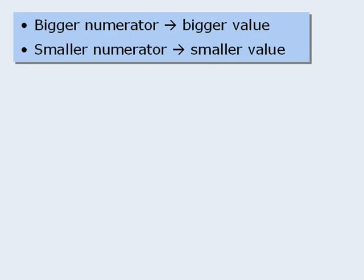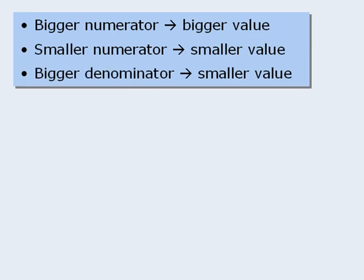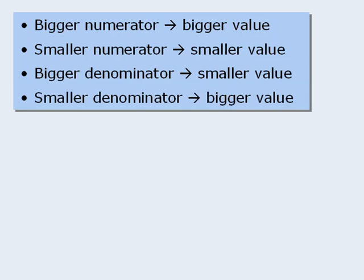What about changing the denominator? Well, if we take a fraction and make its denominator bigger, the result is a decrease in the value of that fraction. For example, if we take the fraction 12 over 3 and increase the denominator to 4, the value of the fraction decreases. In other words, 12 over 4 is less than 12 over 3. Conversely, if we take a fraction and make its denominator smaller, the result is an increase in the value of that fraction.